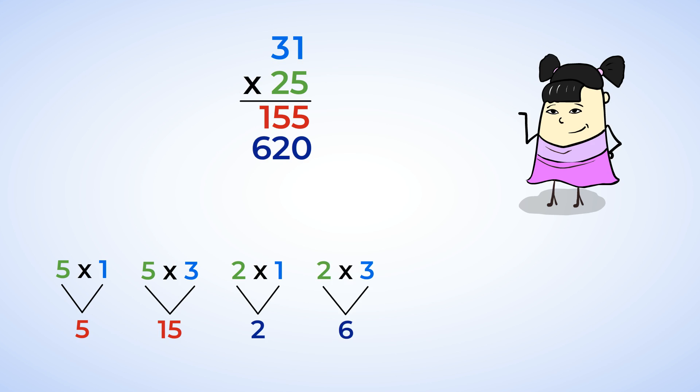So now there are two numbers, 155 and 620. 155 is the number we got for multiplying the 5 by the 3 and the 1. And 620 is the number we got for multiplying the 2 by the 3 and 1. So we need to add 155 and 620 together to get our final answer. Okay, starting on the right with the 1s. 5 plus 0 is 5. And 5 plus 2 is 7. Finally, 1 plus 6 is 7. Ah-ha! Our final answer is 775.